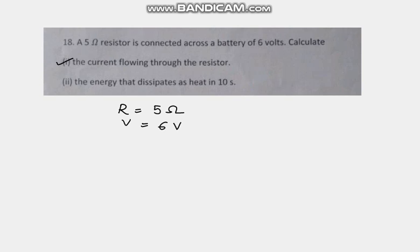Now we know we can find this out. The equation connecting R, V, resistance, voltage, and current is Ohm's law. So from Ohm's law, V is equal to IR, or I will be V by R.